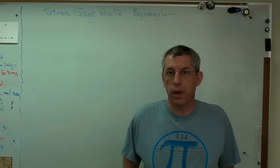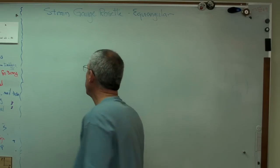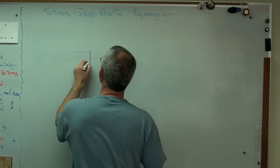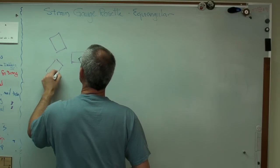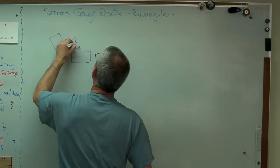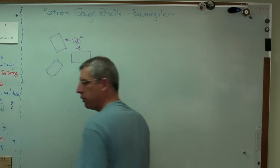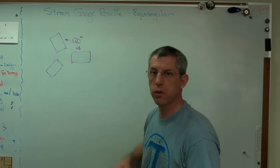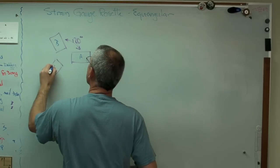Remember strain gauge rosettes are three gauges and they can be set at any angle with respect to one another. An equiangular rosette is one where the angles between them are equal and that means they're going to be 120 degrees apart. That's what I mean when I say an equiangular strain gauge. There's 120 degrees apart and I'm going to call these A, B, and C.